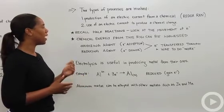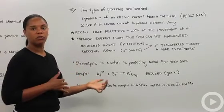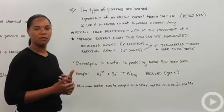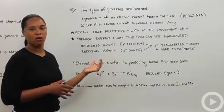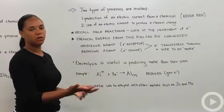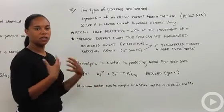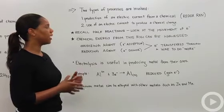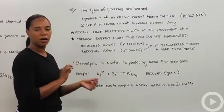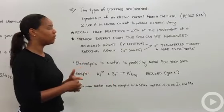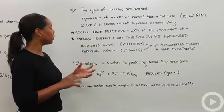Recall that half reactions help you look at and keep track of the movement of electrons. You have a species that's being oxidized, usually a metal, and a species that's being reduced, usually a non-metal. Those two things work together to give you a redox reaction. If you write the half reactions, then you can specifically look at how many electrons are being moved back and forth between the two elements or two species.